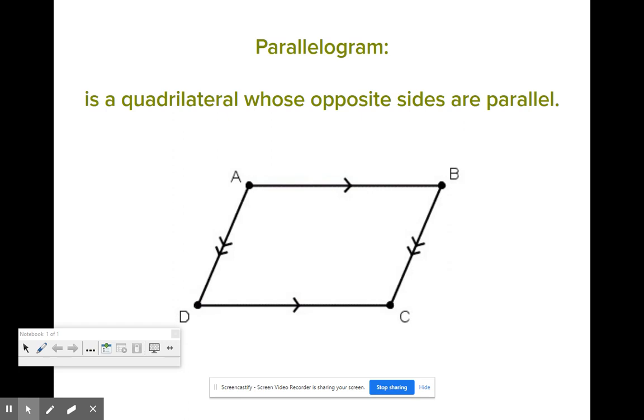For example, it is a quadrilateral, so we know that it is a four-sided shape whose opposite sides are parallel. So we only know those things about a parallelogram so far in our geometry experience.